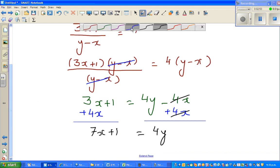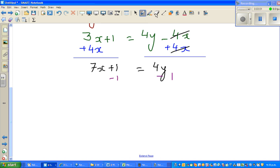Now if I take away 1 from this side, I take away 1 from this side. These are the two sides of the equation, so this and this get cancelled. You've got 7x equals 4y minus 1.